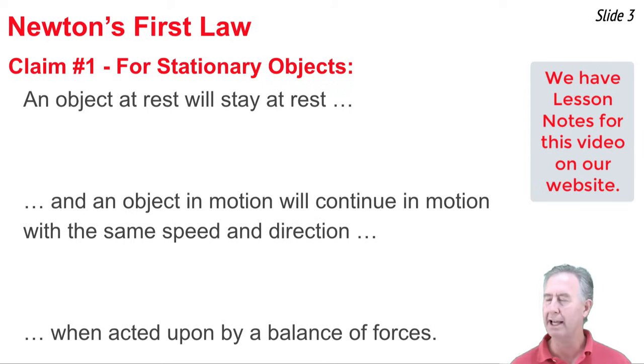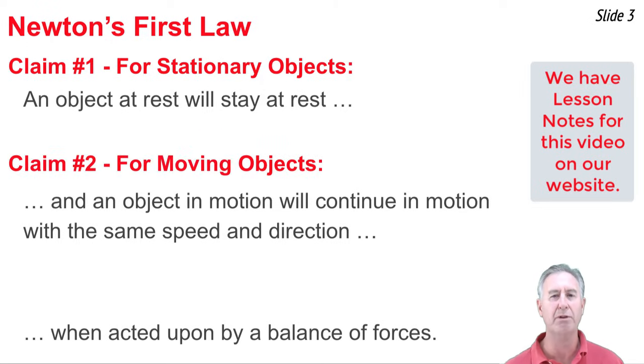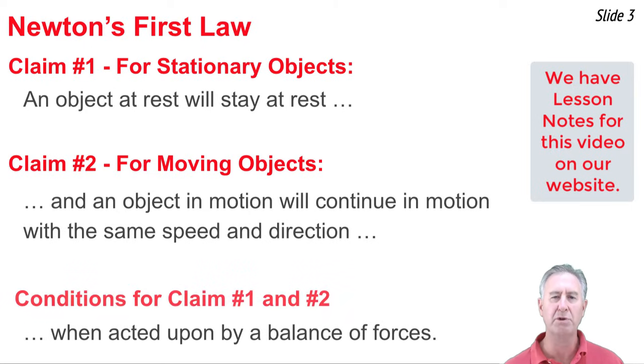First of all, there's a claim being made for stationary objects, and that claim is that stationary objects will stay put. And then second, there's a claim made for moving objects. Moving objects will continue moving just as they are moving in the same direction with the same speed. These two claims are true, provided that this condition exists, provided that the individual forces that act upon the object are balanced.